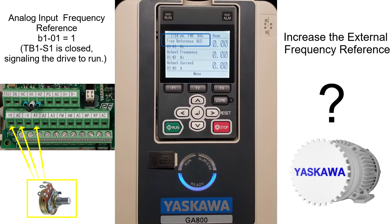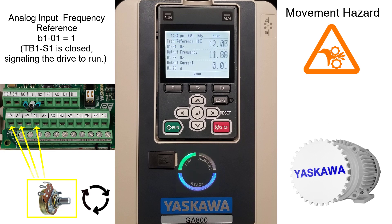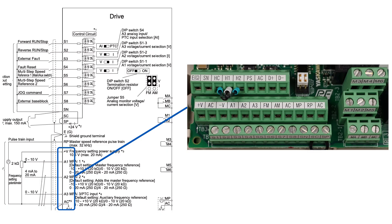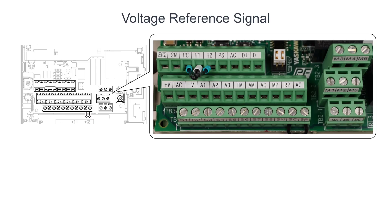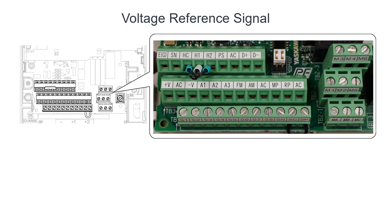If you are using an external frequency reference and the LORE LED is off, indicating remote run control, increase the frequency or signal and see if the drive begins to spin the motor. If this does not work, you need to check the reference signal wiring. Use the connection and input-output diagrams to verify the signal wiring. If the reference signal is voltage and uses two wires, verify which wires are signal and common — make sure the signal wire connects to A1 and the common to AC. Once you have verified the wiring, try running the motor again.